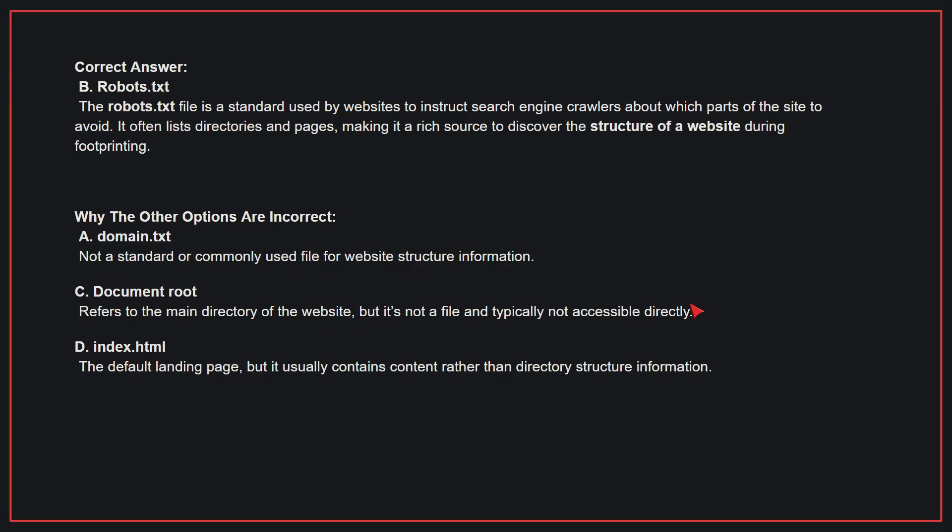Why the other options are incorrect: A, domain.txt — this is not a standard or commonly used file for website structure information. C, document root — this refers to the main directory of the website, but it's not a file and typically not accessible directly. D, index.html — this is the default landing page, but it usually contains content rather than directory structure information. Therefore, the correct answer is B.